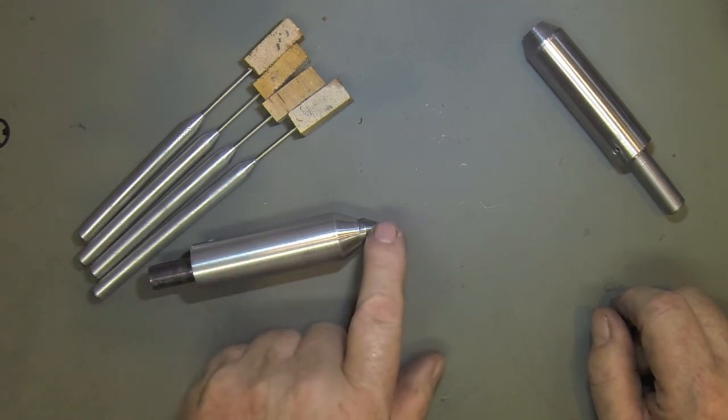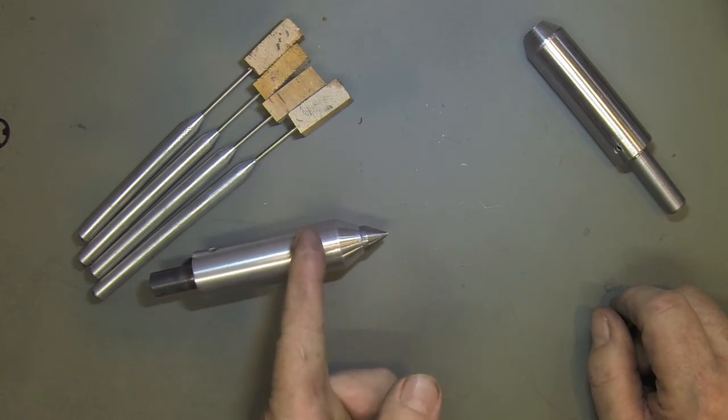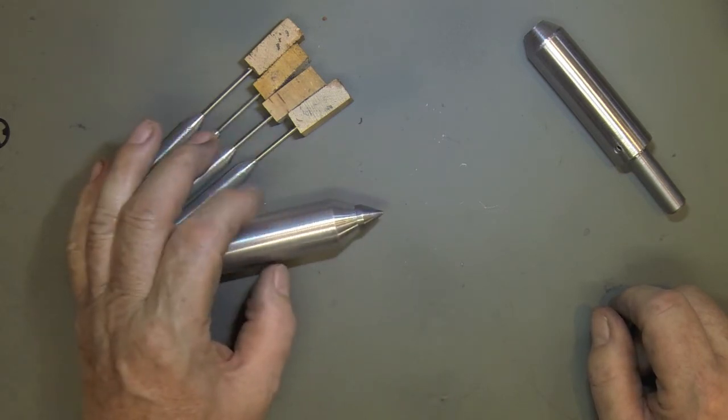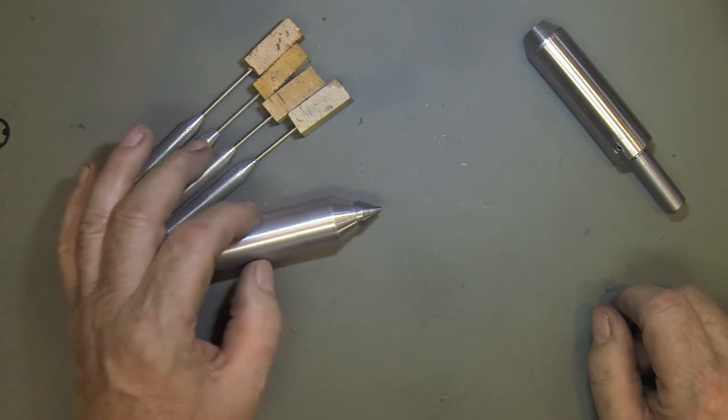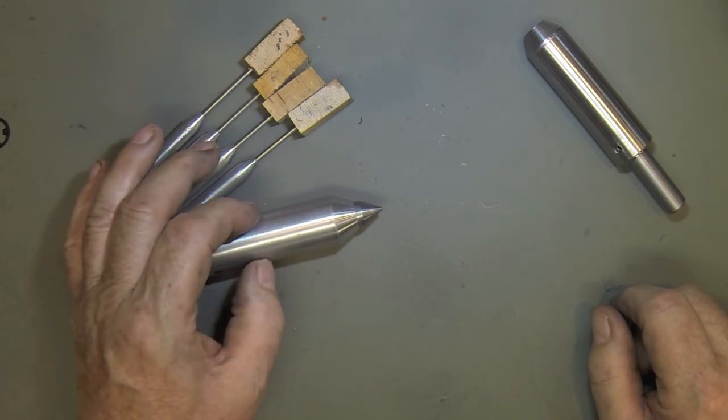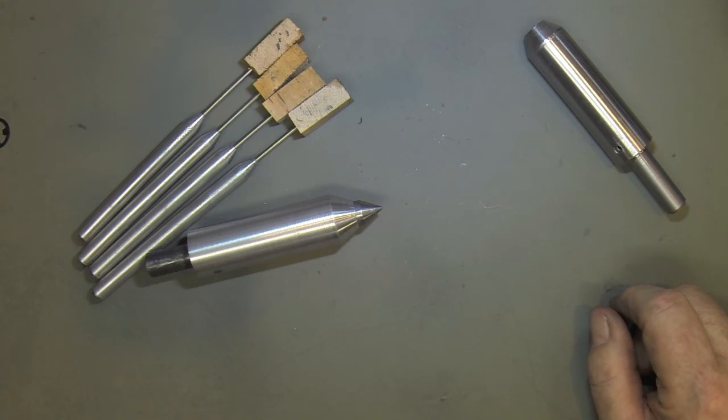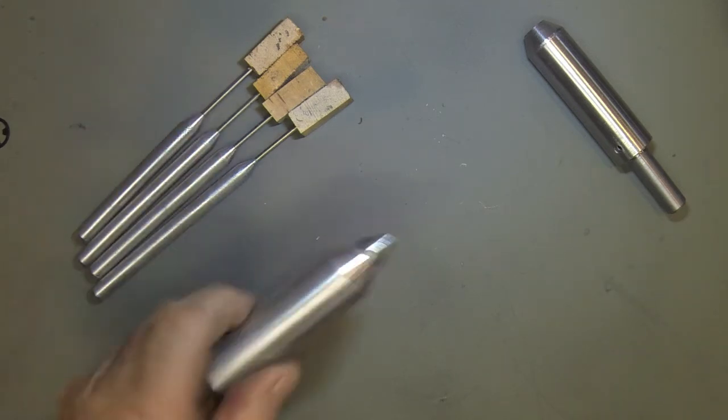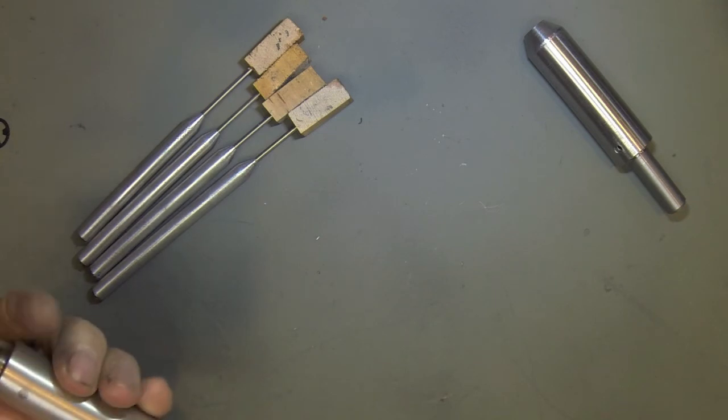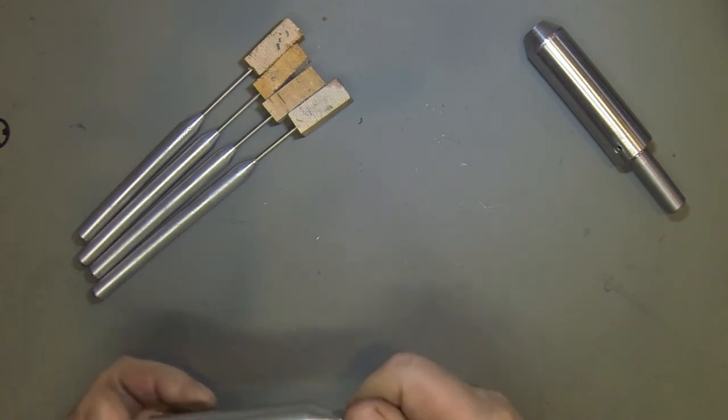This business end here has the e-clip about halfway and the rest of it is still at a half inch. The spring fits around it. It fits in there and then the spring is compressed with that on one end and this on the other.